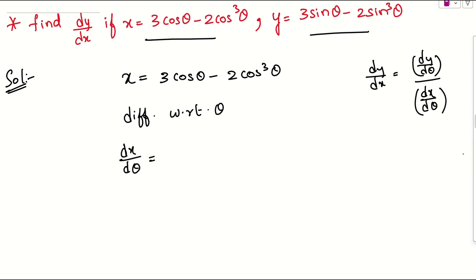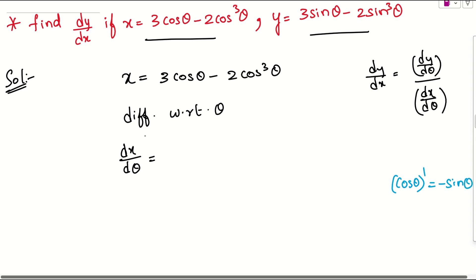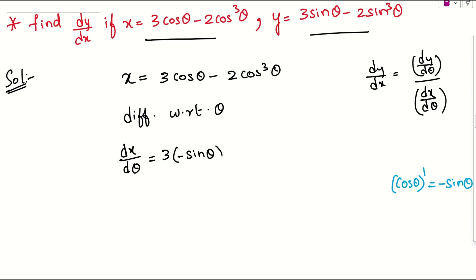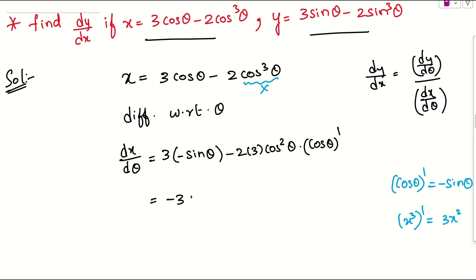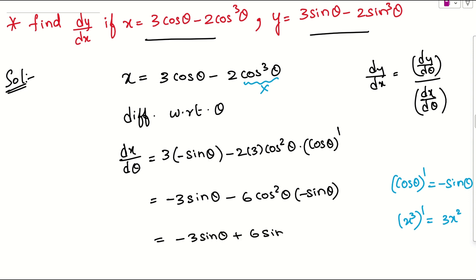dx/dθ is nothing but — we know the derivative of cosθ is minus sinθ — so this is 3 times minus sinθ, minus 2 times. This term is in the form of x³, whose derivative is 3x², giving 3cos²θ, times the derivative of cosθ which is minus sinθ. Simplifying: dx/dθ = minus 3sinθ plus 6sinθ·cos²θ.